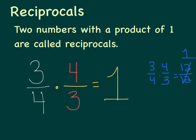Or if you did the simplify before you multiply, you would see that three divided by three is one, and four divided by four is one. Then if you just multiply across, you get one over one, or just one. So reciprocals are two numbers with a product of one.